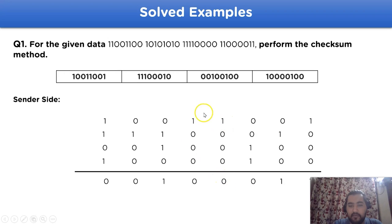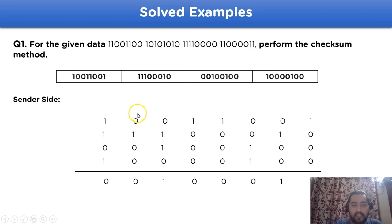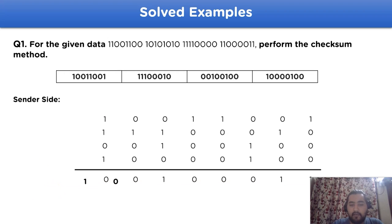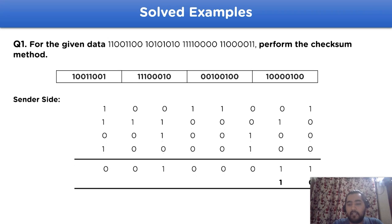Continuing the addition: carry plus 1 gives 0 with carry 1, carry plus 1 gives 0 with carry 1 again, giving 1 0 1 with carry. Proceeding: 1 carry, 0 plus 1 plus 0 is 1, 1 plus 0 is 1, 1 plus 1 is 0 with carry, 0 plus 0 is 0, 0 plus 0 is 0. With the extra carry bit, we add the carry back to the obtained data, resulting in 1 0 1 0 0 1 0 0.